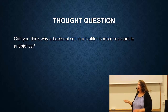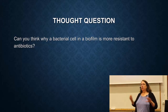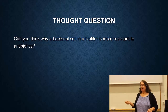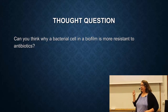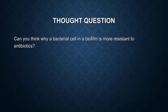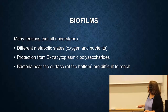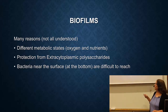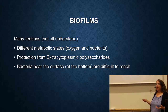Biofilms are usually very resistant to antibiotics, and it's a huge problem. Why would a bacterial cell in a biofilm be more resistant to an antibiotic? There are many reasons, not all understood, but they're in different metabolic states. Oxygen and nutrients are limiting. They're protected by this extracellular polysaccharide, and bacteria near the surface are difficult to reach.